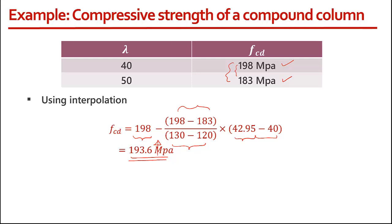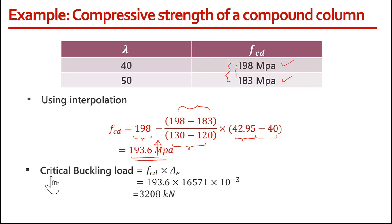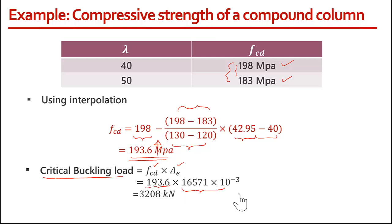Now that we know the design stress FCD, we can find the axial compressive force that can be applied to this column. The force is simply stress times area. The critical buckling load is FCD times the effective area. Multiplying and converting to kilonewtons gives approximately 3208 kN, so around 3200 kN can be applied to this column.